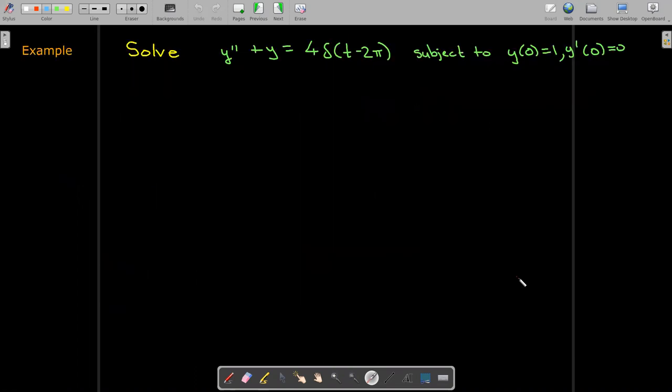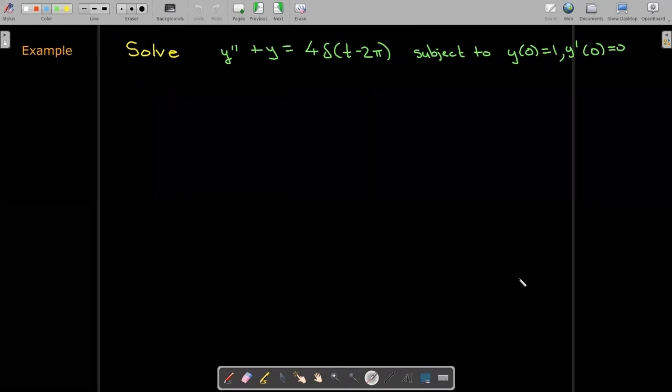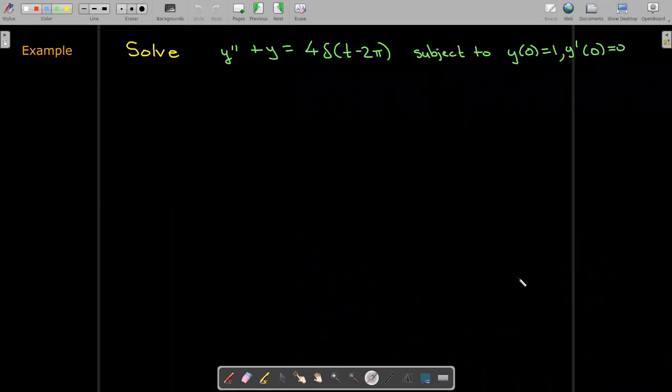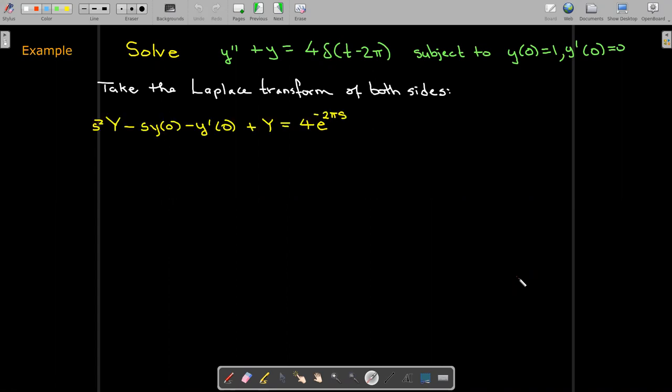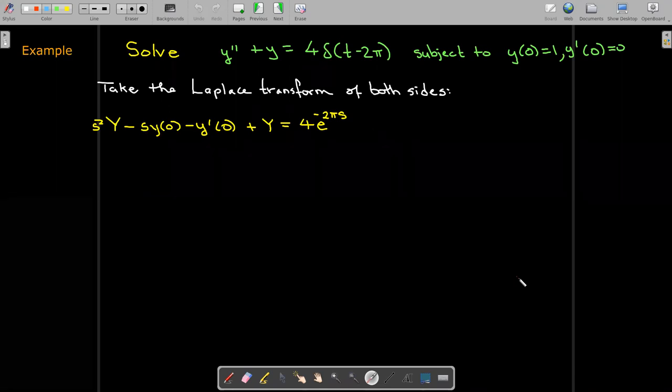So let's use this in an example where we're going to solve this second order differential equation with the initial value conditions that y at 0 is 1 and y prime of 0 equals 0. So we're going to take the Laplace transform of both sides. We know that if we use uppercase Y to represent the Laplace transform of lowercase y, then our formula for y double prime is s squared Y minus s evaluated at y of 0 minus y prime evaluated at 0 plus Y.